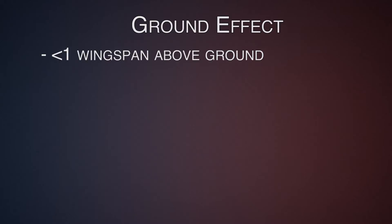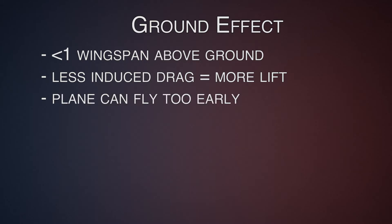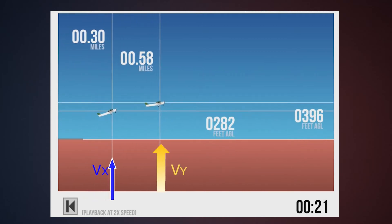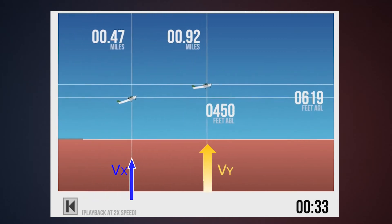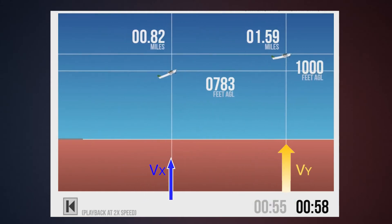A few things that'll come in handy later. Ground effect happens when you're less than one wingspan above the surface. The induced drag — the part of the drag that creates lift — is reduced, which means more lift, or an increase in lift at a slower airspeed. The downside is that your airplane can become airborne before reaching the required takeoff speed. Also as a review, VX is the best angle of climb where you get the most altitude with the shortest horizontal distance, and VY is best rate of climb where you get the most altitude within the shortest amount of time.